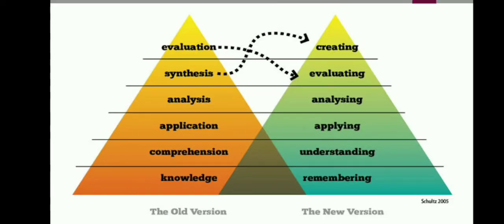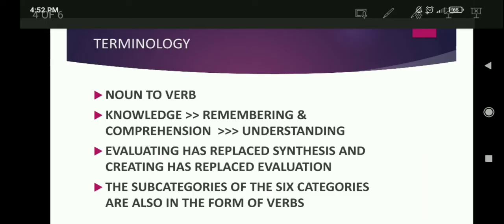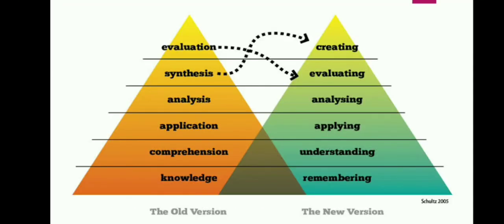The subcategories of the six categories are also in the form of verb: Remembering, Understanding, Applying, Analyzing, Evaluating, Creating. Then there are subcategories — remembering and recognizing. The values of the knowledge level subcategories are: recalling and recognizing. Remembering is a type of verb in -ing form.